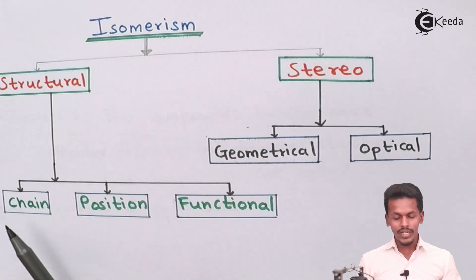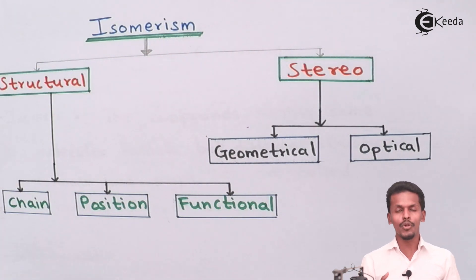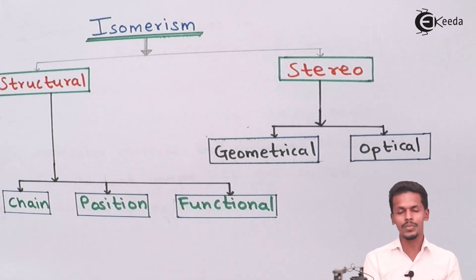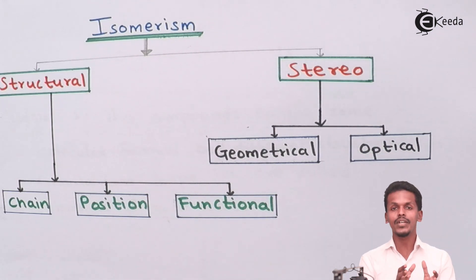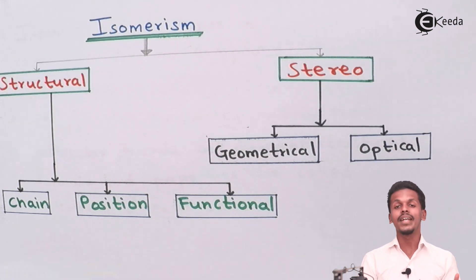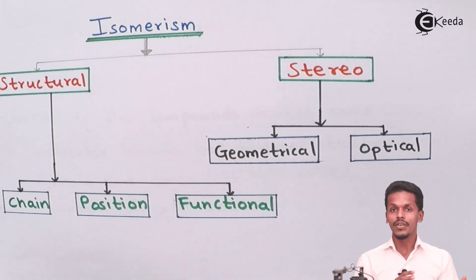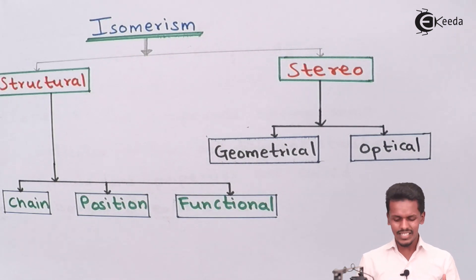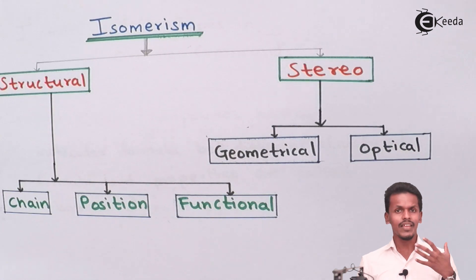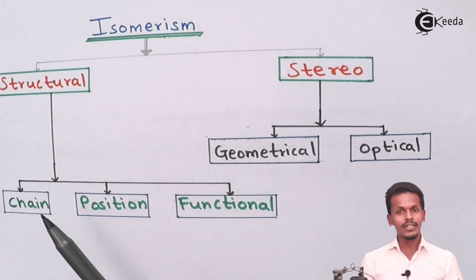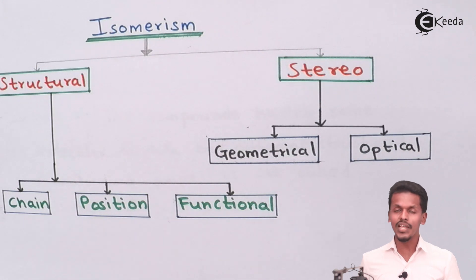Talking about chain isomerism — suppose we consider two molecules that have the same molecular formula, making them isomers. In chain isomerism, the two molecules have the same molecular formula but differ in their carbon skeleton when compared to each other. This is known as chain isomerism, which we will discuss in our next lecture in deep detail.